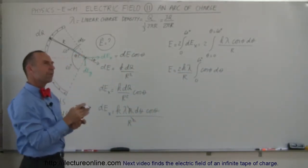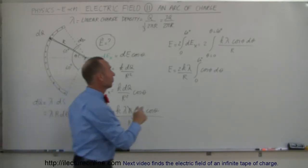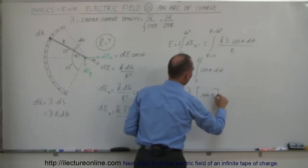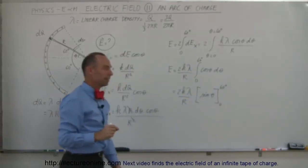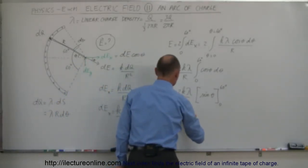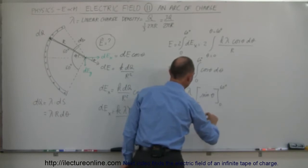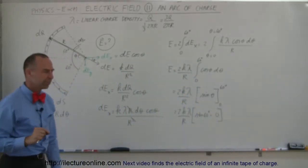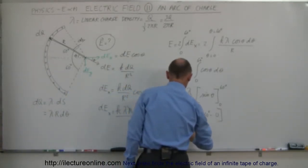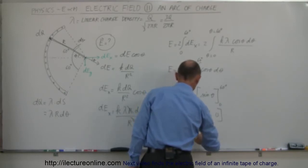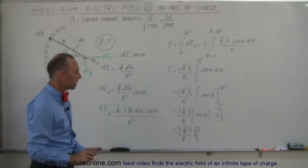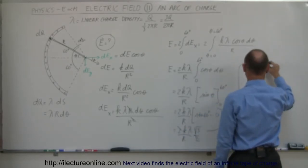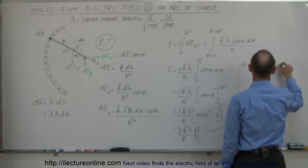Since R, K, and lambda are all constants, they come out of the integral. So E equals 2K·lambda over R times the integral from 0 to 60 degrees of cosine(theta)·D theta. The integral of cosine is sine, so this equals 2K·lambda over R times the sine of theta evaluated from 0 to 60 degrees. Plugging in: sine of 60 degrees is √3/2, and sine of 0 is 0. So E equals 2K·lambda over R times √3/2, and the 2's cancel, giving E equals √3·K·lambda over R.